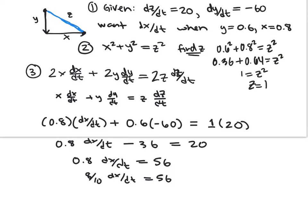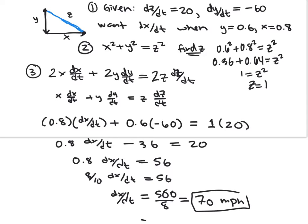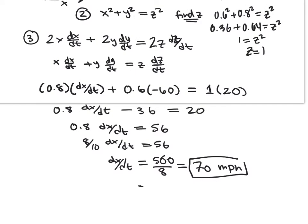So dx/dt equals 56 over 0.8. To avoid dividing by a decimal, write it as 560 over 8, which is 70 miles per hour. So unless the cop increases his speed above 70 miles per hour, he isn't going to catch that bad guy — or they could put out spike strips to reduce his speed.